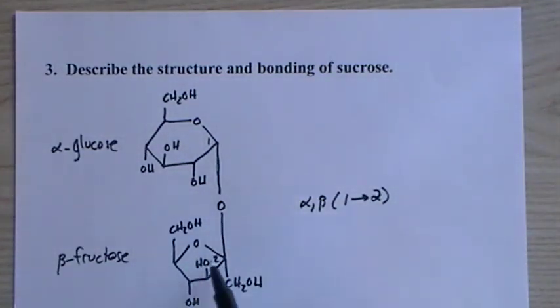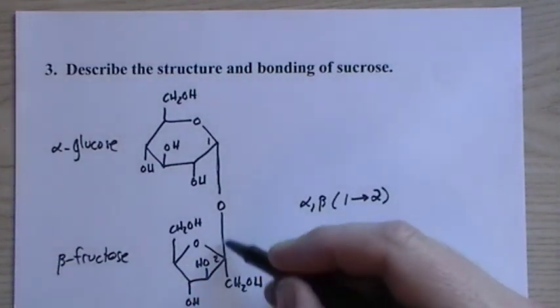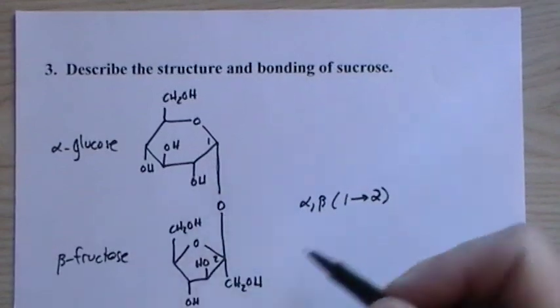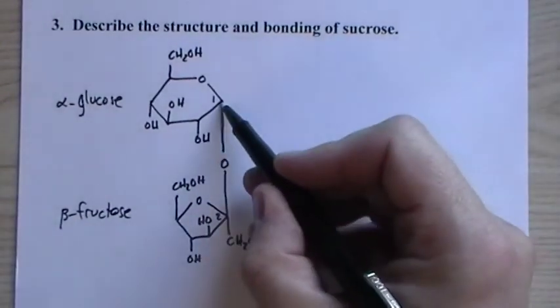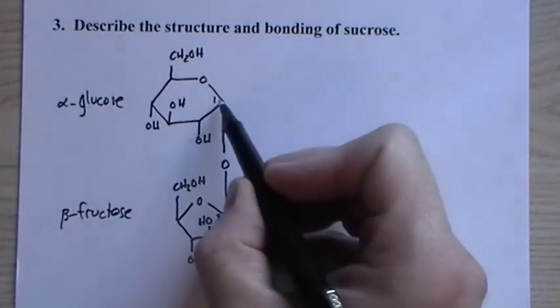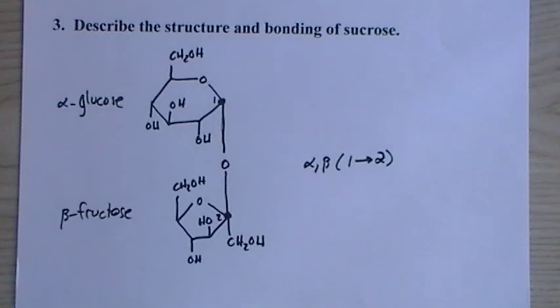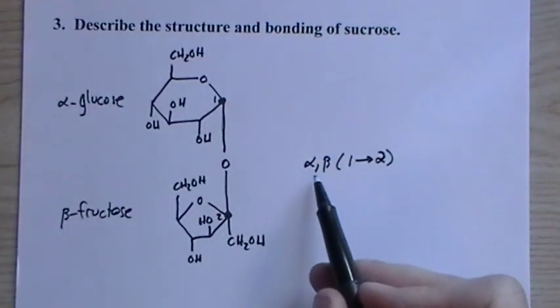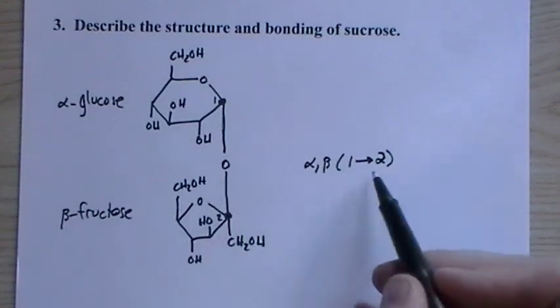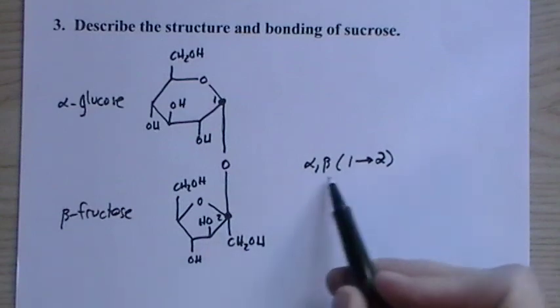The beta fructose, we have the OH group was going up. So when they linked together they lost, water was removed. And so we get an alpha from the 1. And since it's off of the same, it's off of the carbon on each of these rings that denotes alpha and beta. Then it's alpha for the glucose, beta for the fructose. And it goes from site 1, carbon 1, to this carbon 2.